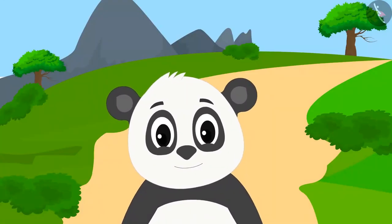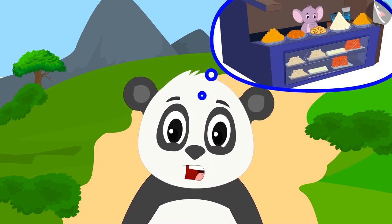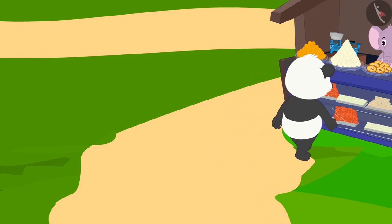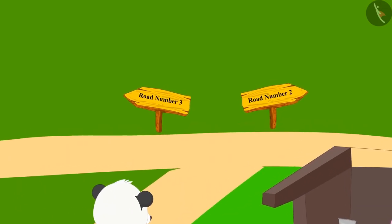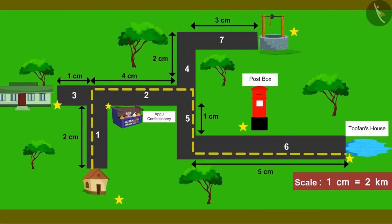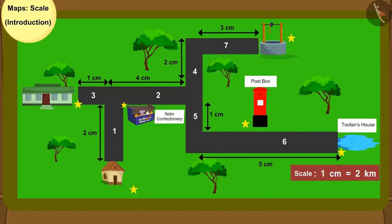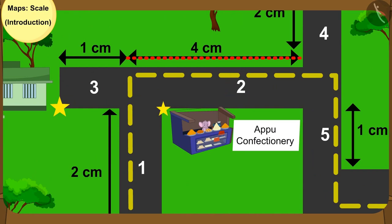Golu is happy but also sad about the scale because he would have to walk far to reach Appu's confectionery. Walking on road number 1, Golu finally reached Appu's confectionery and bought sweets for Tufan. Can you tell which road Golu will have to walk next? Look at the map and tell. Now can you tell the distance of road number 2 using the scale on the map? You can pause the video to find the answer.